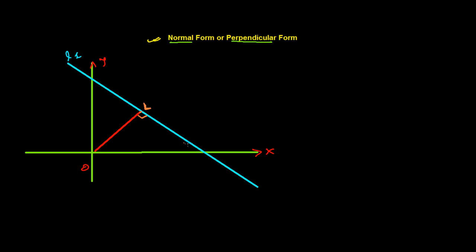The same line L1 is cutting the x-axis at point A, whose coordinate is (OA, 0), and it is cutting the y-axis at point B, whose coordinate is (0, OB). The perpendicular from the origin is making angle alpha with the positive x-axis, and the length of this perpendicular is given as P.